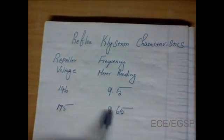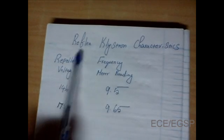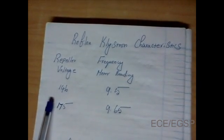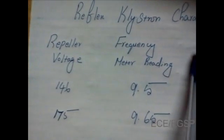This is the tabulated reading for Reflex Klystron Characteristics with two columns. The first one is repeller voltage, and the second one is frequency meter reading.